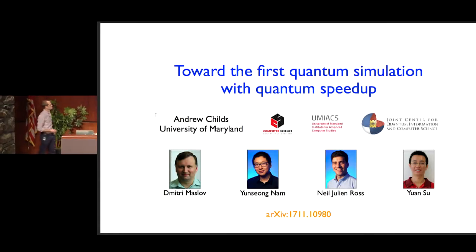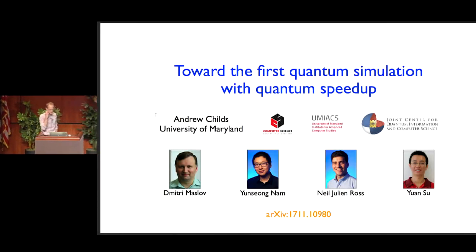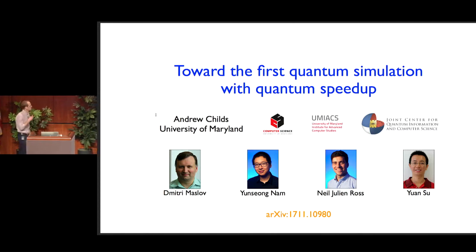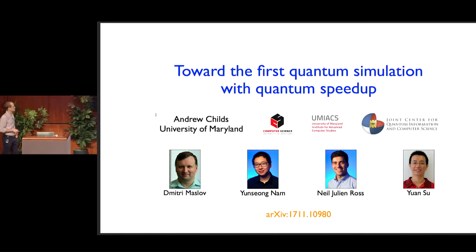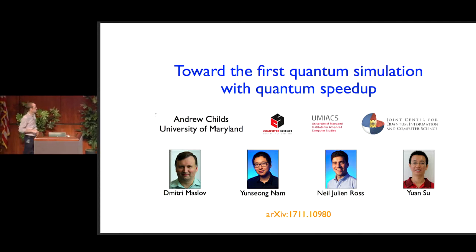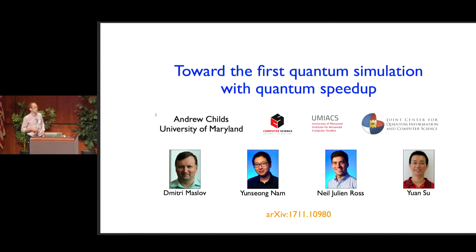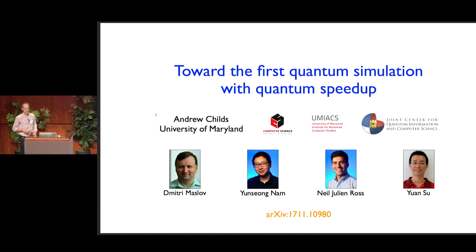I'd like to tell you about some recent work on resource requirements for a quantum simulation. This is joint work with co-authors Dmitry Maslov, Yun-Seong Nam, Julian Ross, and Yuan Su. These results are described in a paper that you can find in the archive that we posted recently.